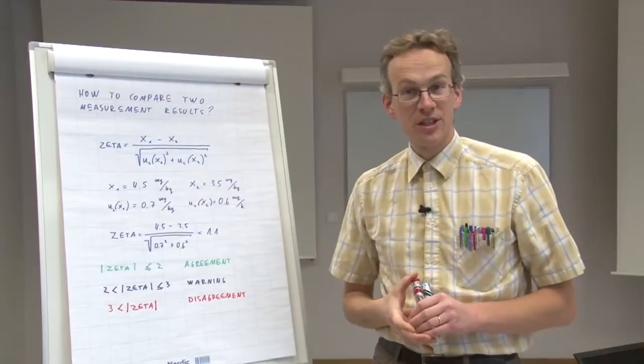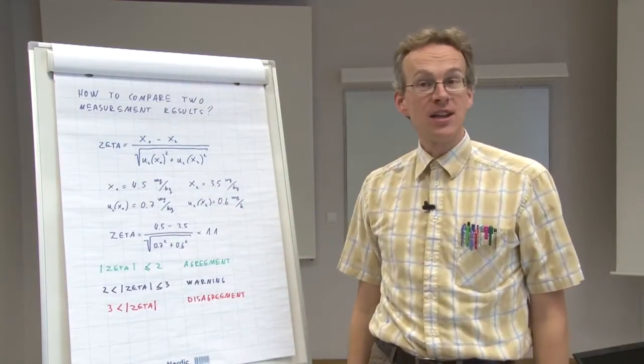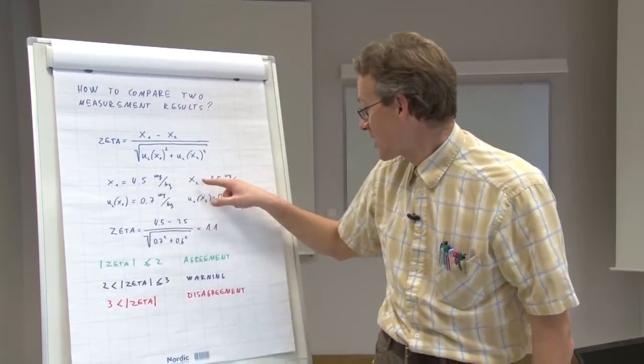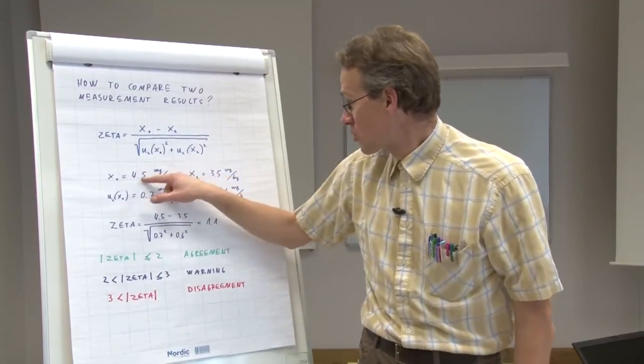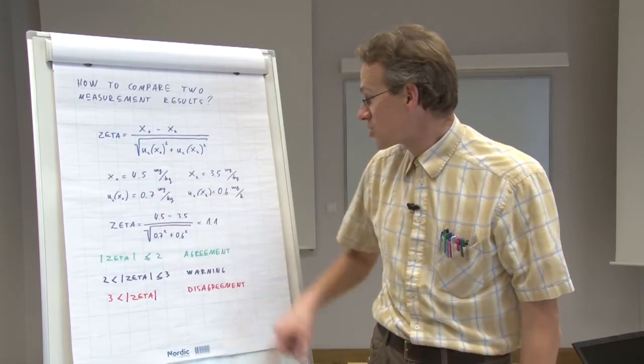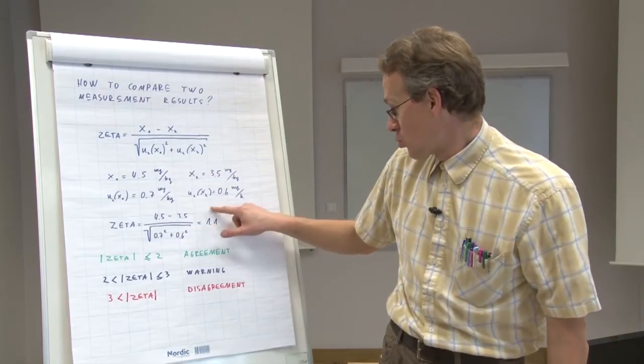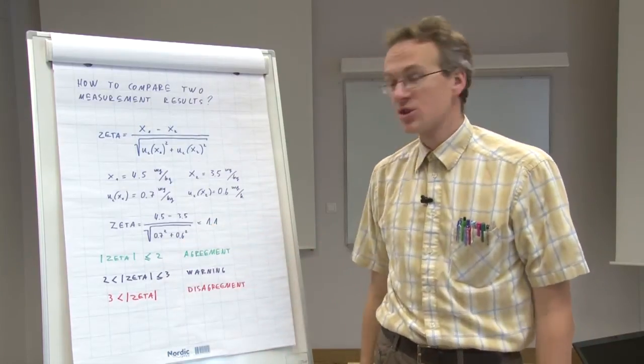So based on these rules and our data, we can say that even though these two results initially look rather different, if we take into consideration their uncertainties, they actually agree very well because 1.1 is certainly smaller than 2.